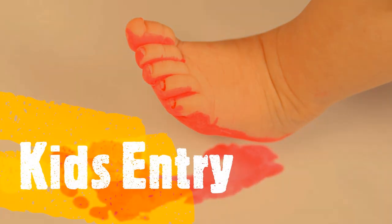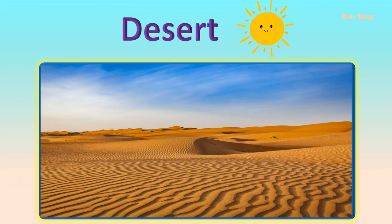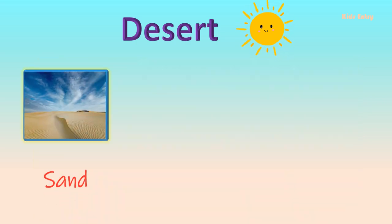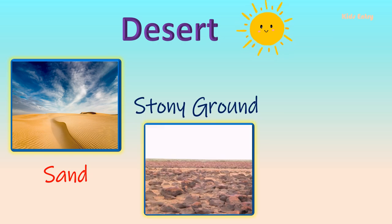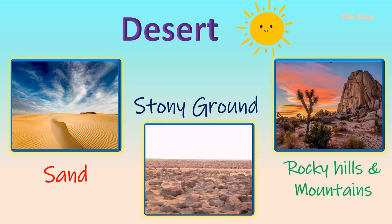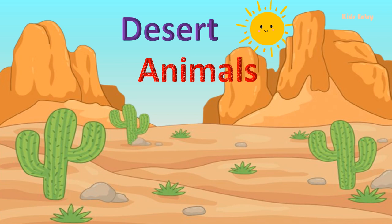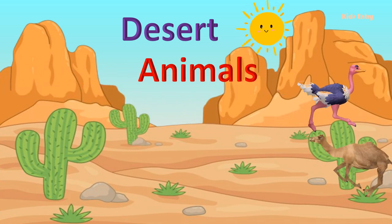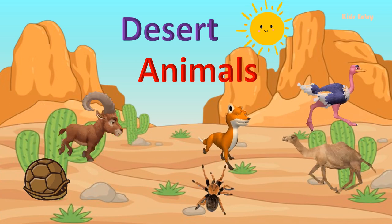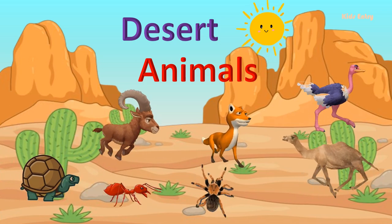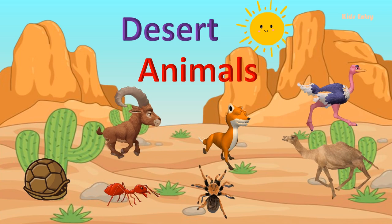Desert is a place where almost no rain. Deserts are huge areas of sand, stony ground, while others have rocky hills and mountains. Desert animals are animals that have adapted to live in a desert habitat. Here, we will see and learn about desert animals. Let's start!